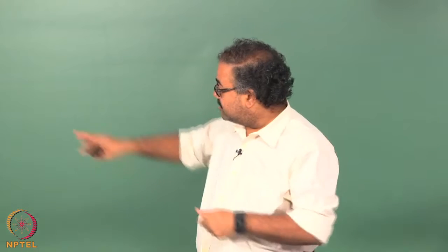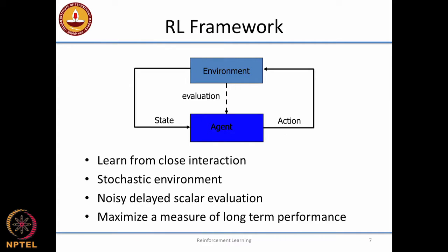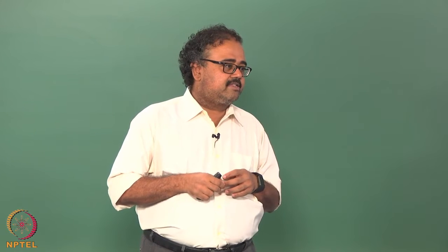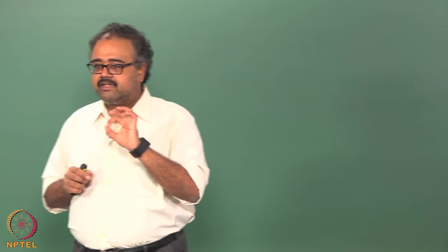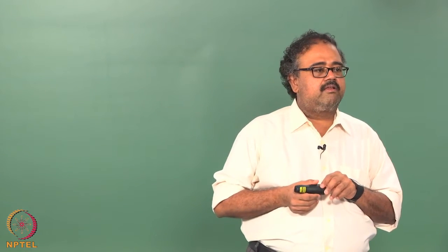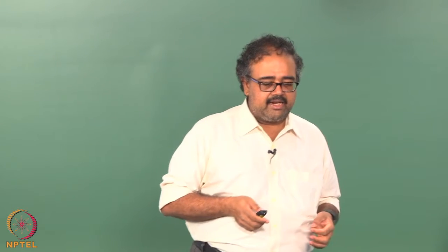In reality things are messier — you have a stochastic environment, delayed evaluation, and noisy signals. The new concept added here is scalar: classical reinforcement learning assumes the reward is a scalar signal. All outcomes — getting hurt might be −100, getting food +5, winning +20, capturing a piece +0.5 — are converted to a number on a scale.